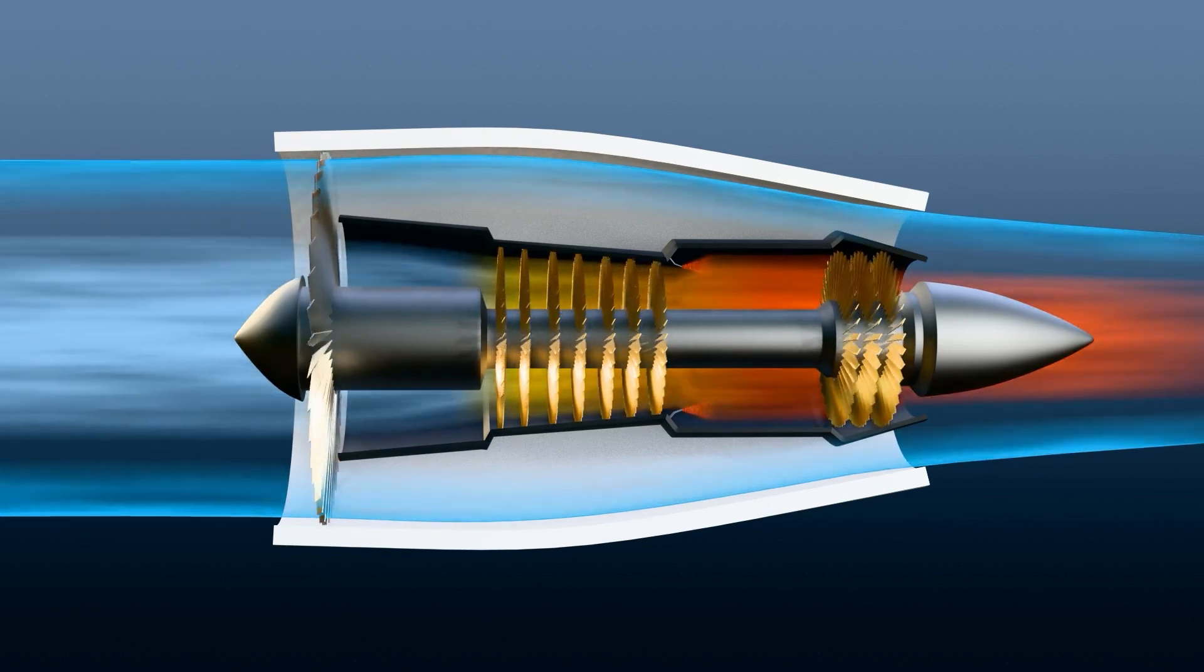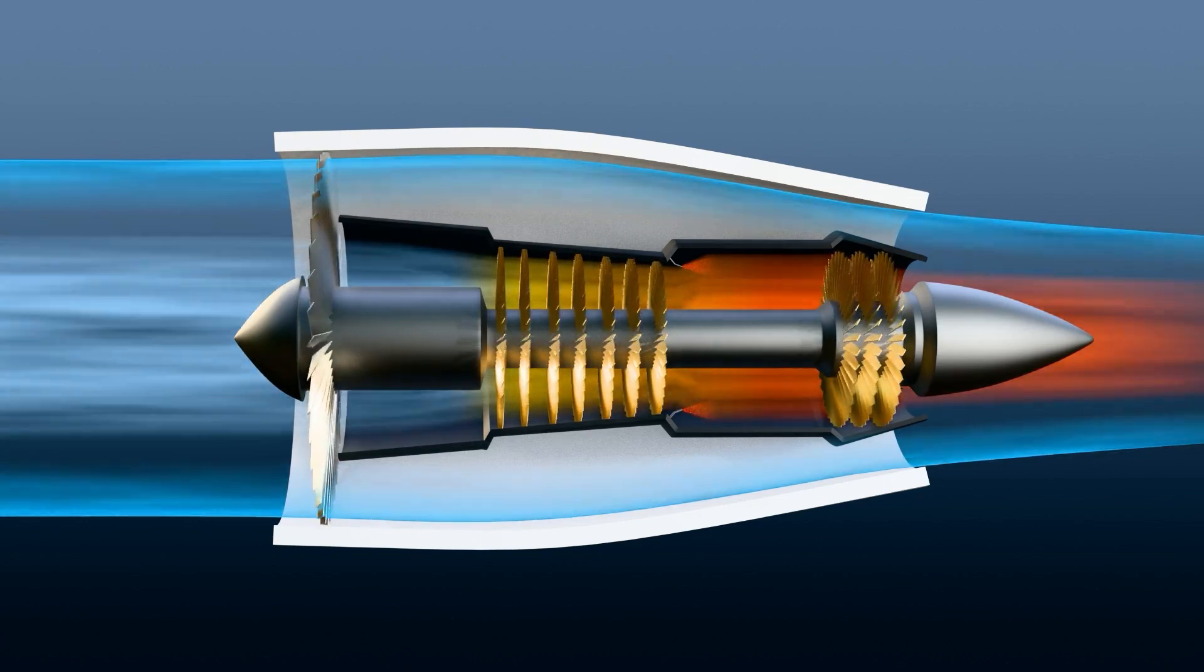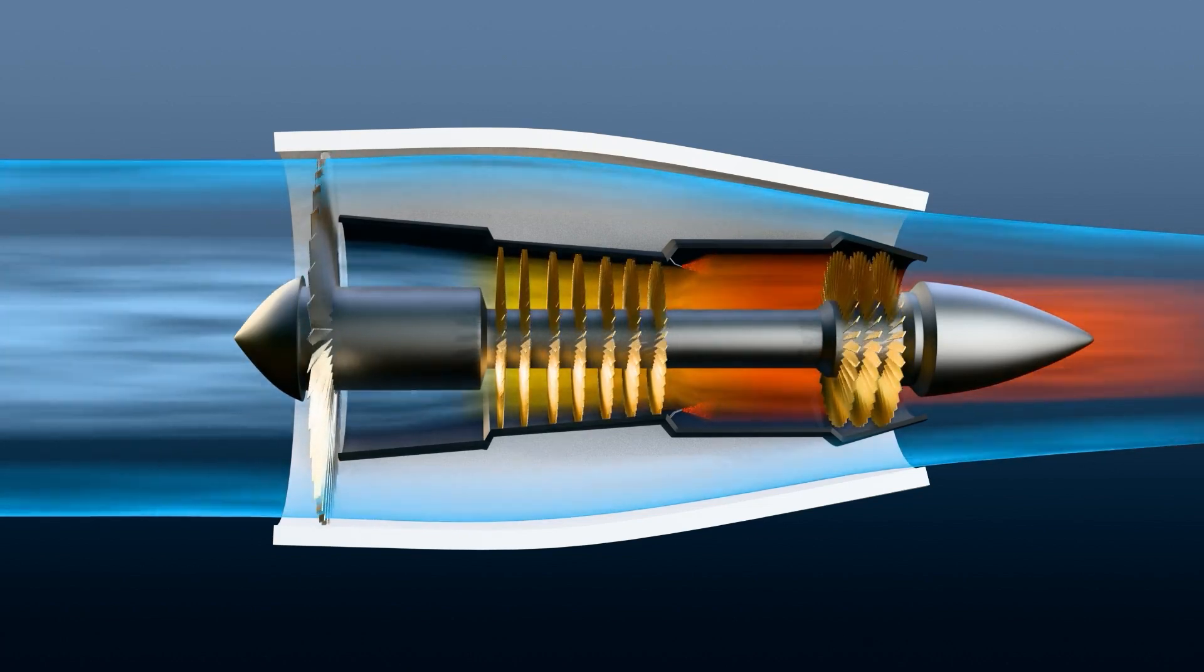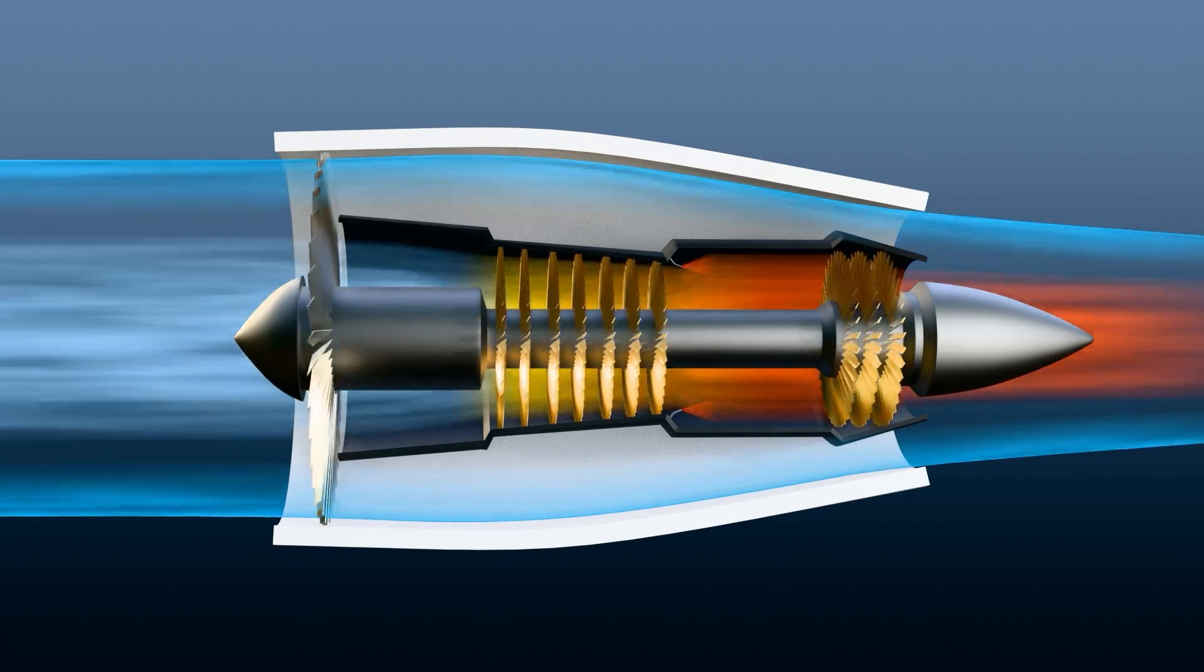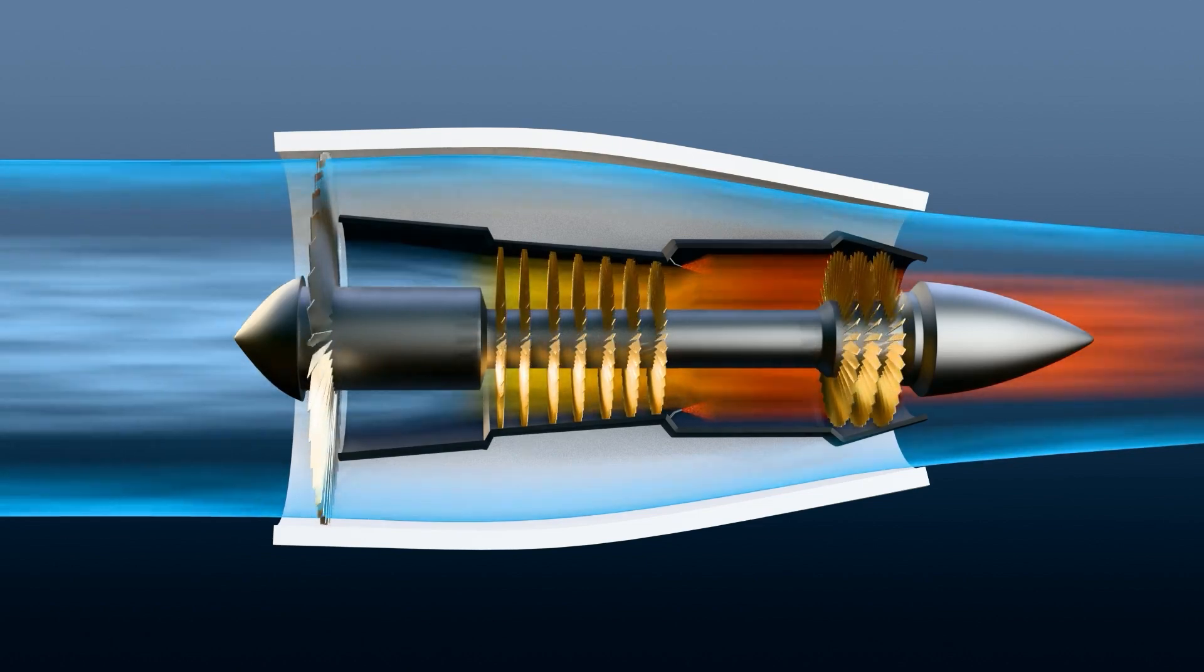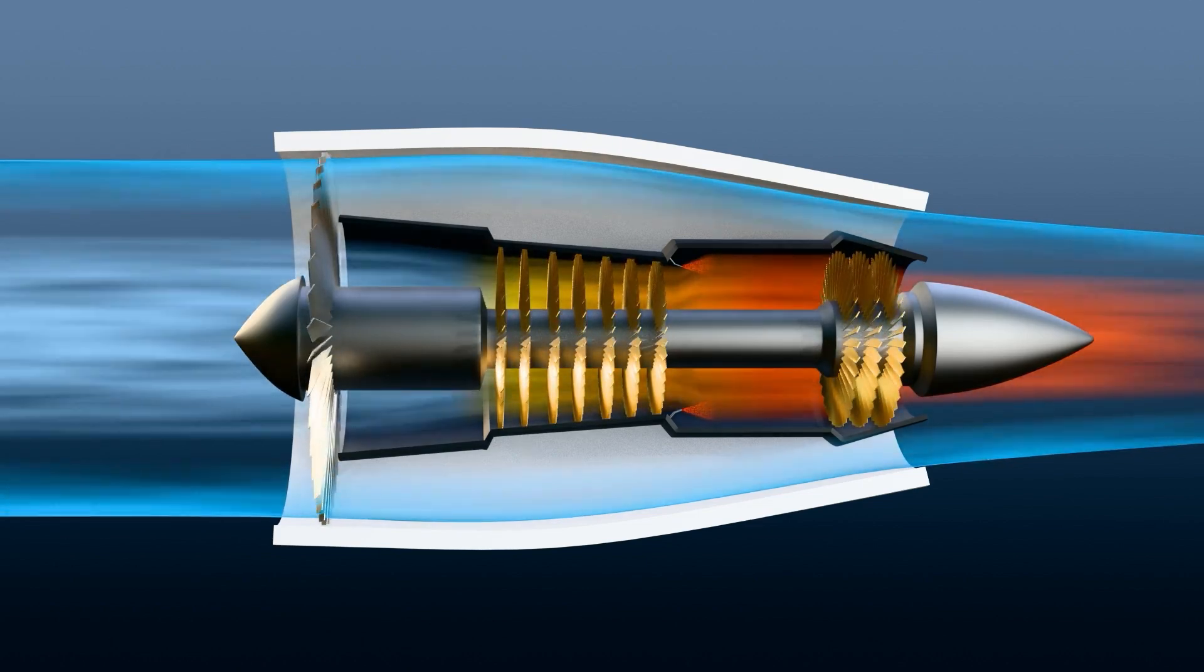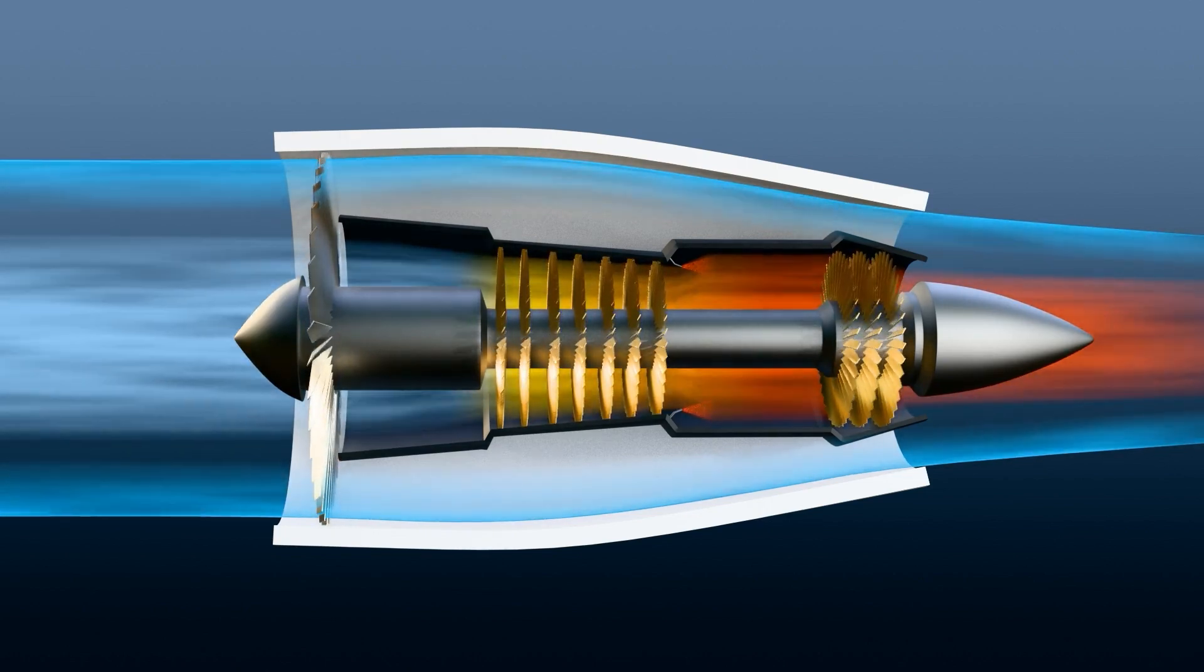Although there are other types, they all work on the same basic principle. They take in air, add fuel, and burn the mixture. The resulting explosive exhaust gases produce jet propulsion just like a turbofan engine. Now let's take a look at these alternatives.